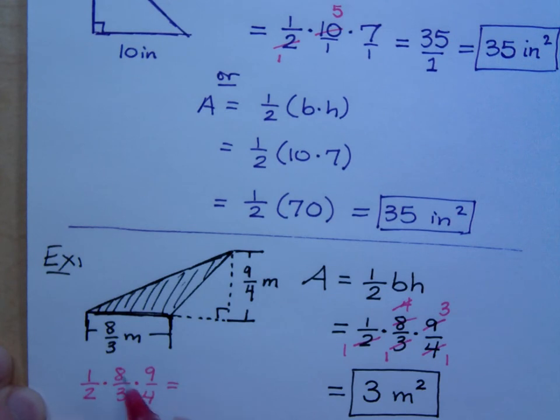If I multiply 1 times 8 times 9, I get 72. 2 times 3 times 4 is what? It's 24.